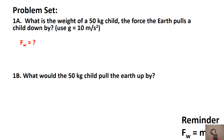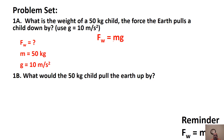Problem 1: What's the weight of a 50-kilogram child — the force the Earth pulls the child down? Using F_W = mg with mass = 50 kg and g = 10 m/s², we get 500 newtons down. We're going back to using g = 10 as a good overall average for gravitational acceleration on Earth.